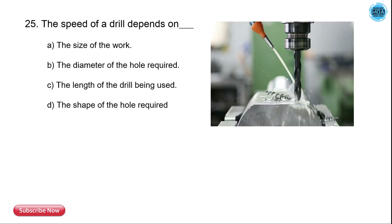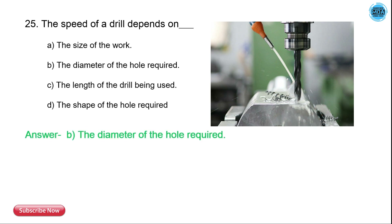The 24th question is: the speed of a drill depends on what? The options are the size of the work, diameter of the hole required, length of the drill required, and shape of the hole required. The correct answer is the diameter of the hole required — the diameter specifies the speed of the drill.